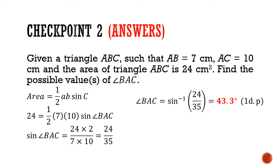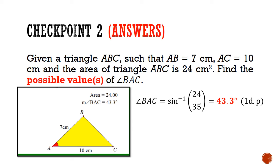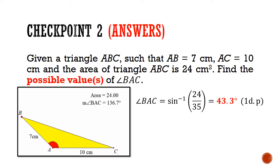But wait, is this the only answer? The question hints at possible values, so does a second answer exist? Let's have a look at the actual triangle. The red angle that you see here is our initial answer of 43.3 degrees. Watch what happens as I increase the size of the red angle. You'll see that the area starts to increase and then as the angle becomes obtuse, it will start to decrease. So an obtuse answer also exists.